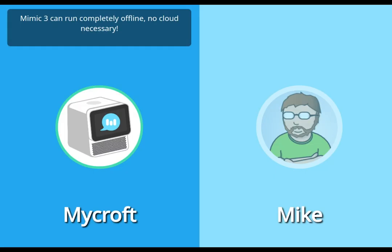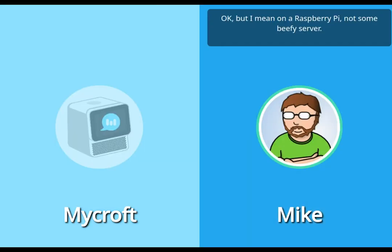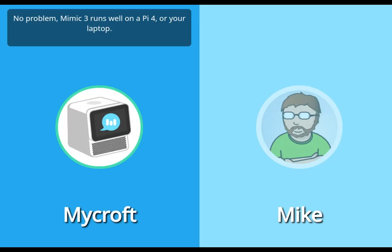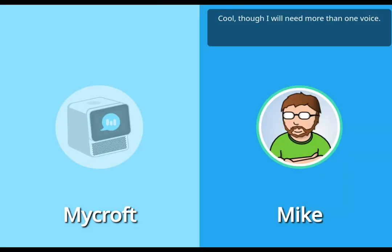Mimic3 can run completely offline, no cloud necessary. Okay, but I mean on a Raspberry Pi, not some beefy server. No problem — Mimic3 runs well on a Pi 4 or your laptop.